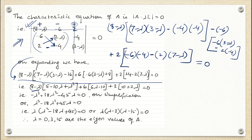After expanding and simplifying with the negative sign, we get: λ³ - 18λ² + 45λ = 0. The highest power is 3, confirming there are 3 roots.